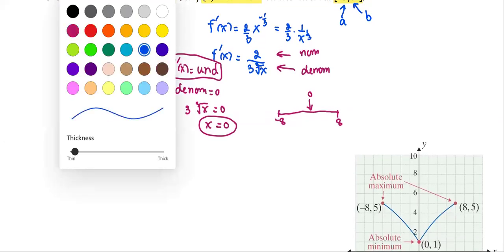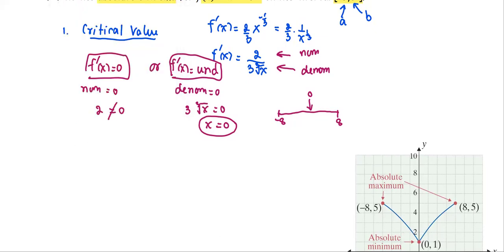In this part, we are going to compute the function value at each point as the function at the left end, the function at the right end, and the function value at the critical value.